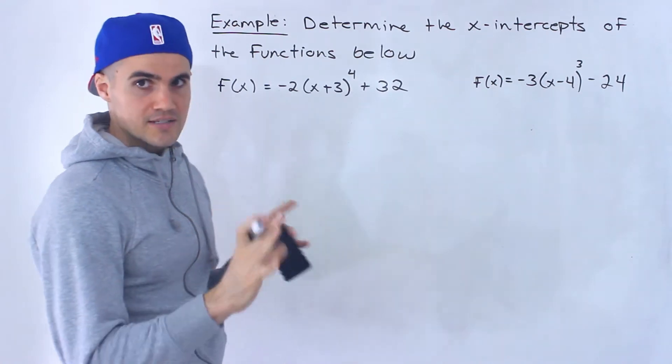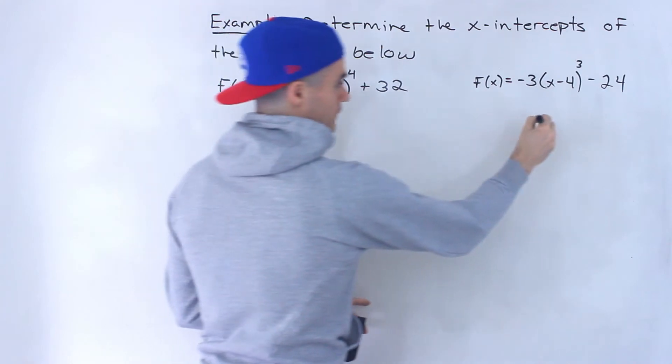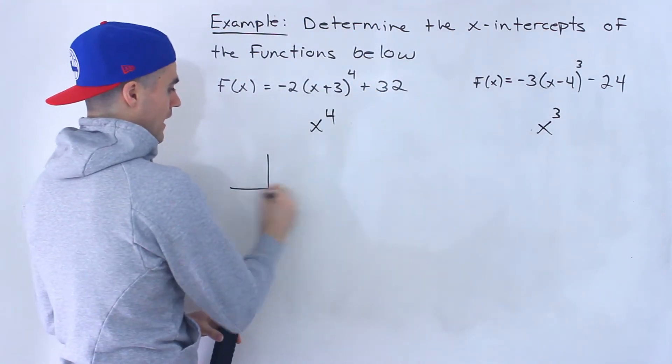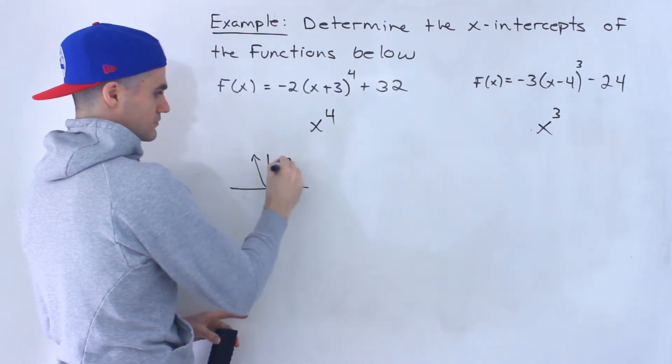So before we get into the algebra of this, notice that the parent function here is x^4. Notice the parent function over here is x^3. Now x^4, we know that it looks like x squared, very similar, like that.